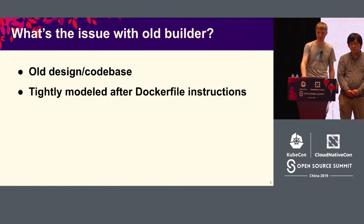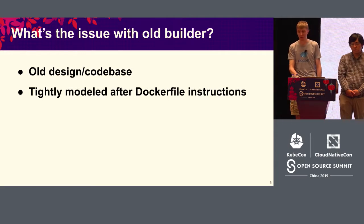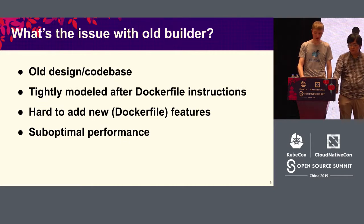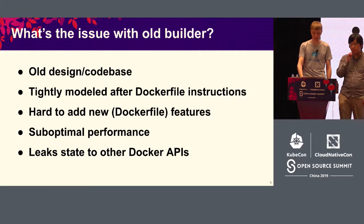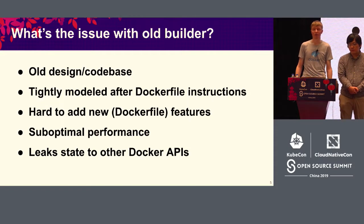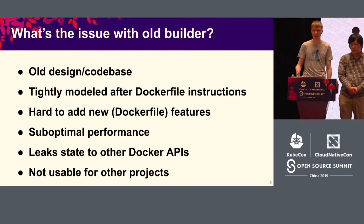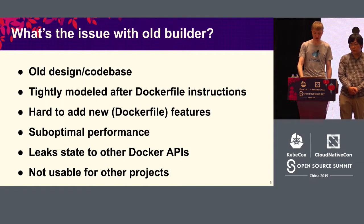One of the issues also is that the builder is very tightly modeled after Dockerfile, so that means we basically can't change anything because Dockerfile has these backwards compatibility rules. We could do better on performance. There's also the issue that it's not completely isolated from the Docker engine. For example, you could do something like a docker stop on a container that's running as part of your build and it will stop your build — that's definitely something that shouldn't happen. And because it's bundled into Docker engine, you can't really use this code for anything else.